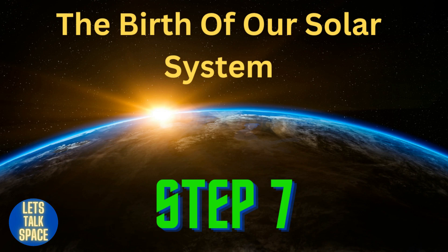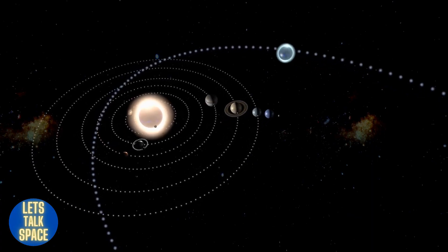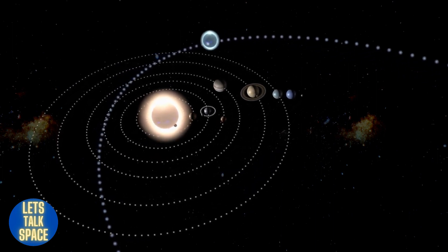Step 7. The birth of our solar system. Our solar system is thought to have formed around 9 billion years after the Big Bang, making it roughly 4.6 billion years old.